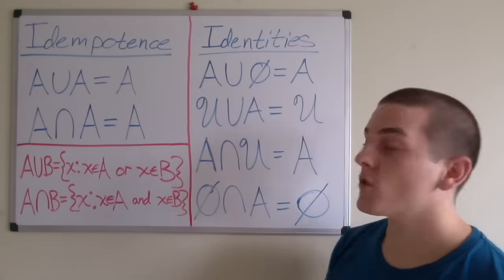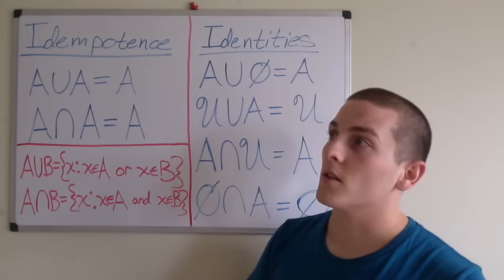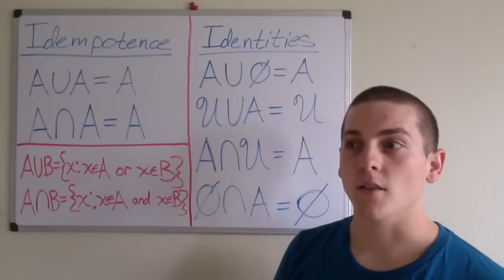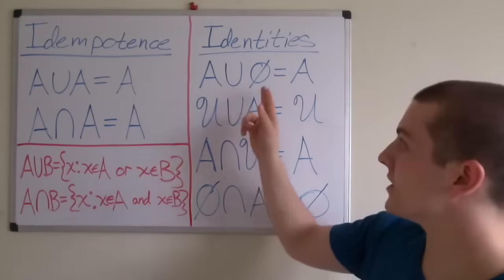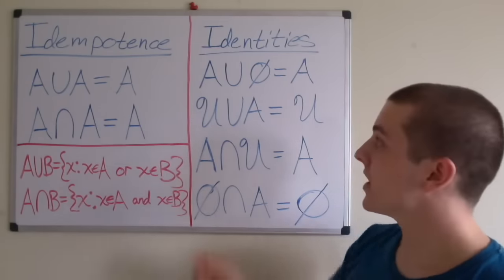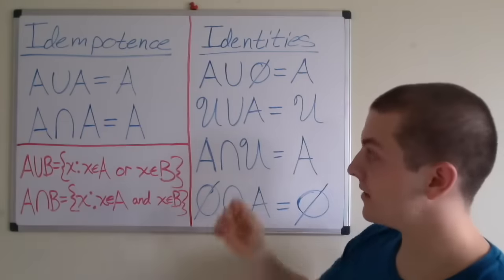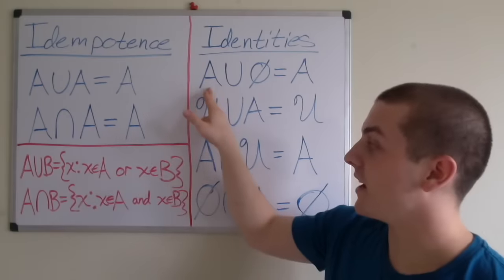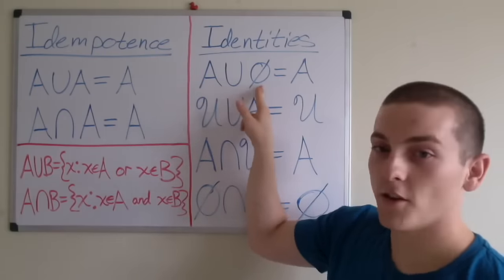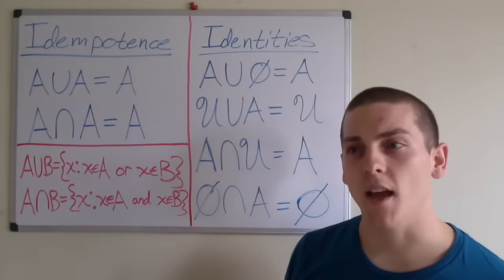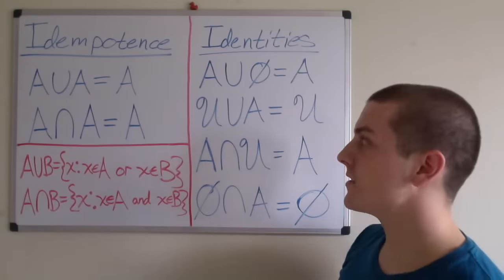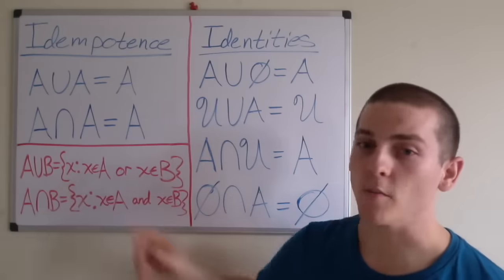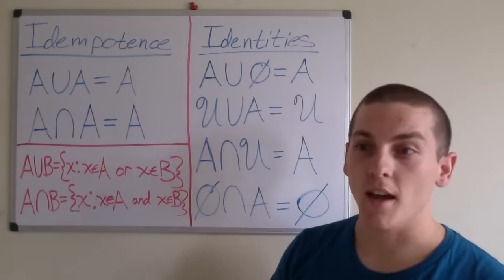Next, we have our identity laws. Identity laws are laws where we have a given set and we're performing an operation on that set with a given element — these elements are the identity elements. For this case, the null set and the universal set are our identity elements. So A union null set equals A. By definition, A union null set equals the set containing elements x such that x is an element of A or x is an element of the null set. But since the null set is empty, it's really saying the set containing elements x such that x is an element of A — or more simply, it equals A.